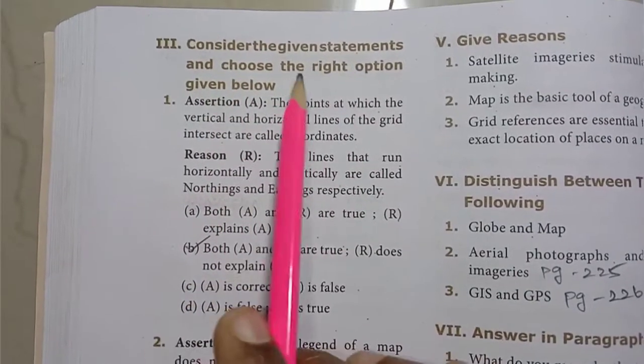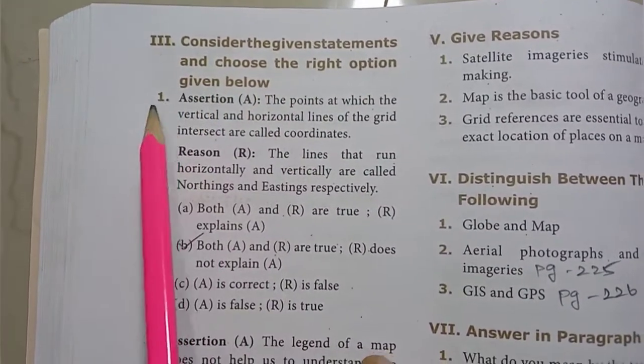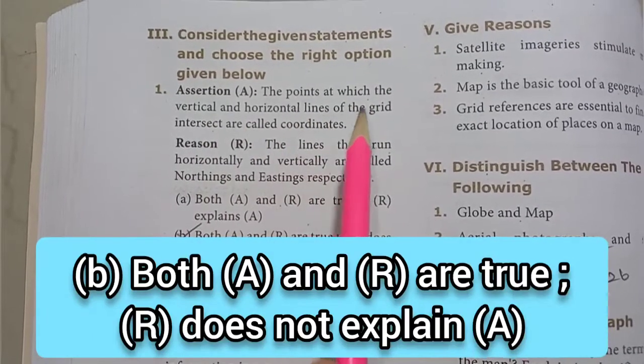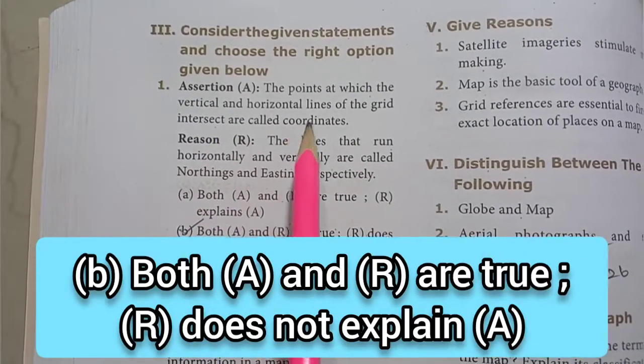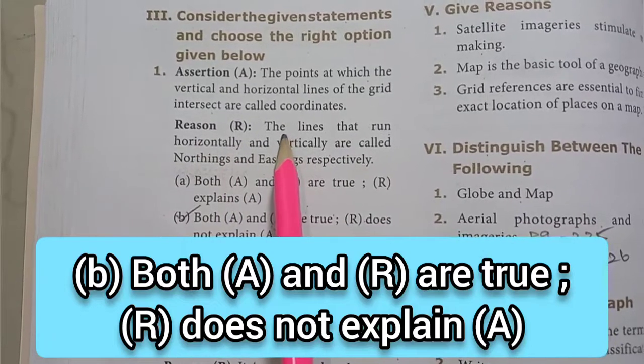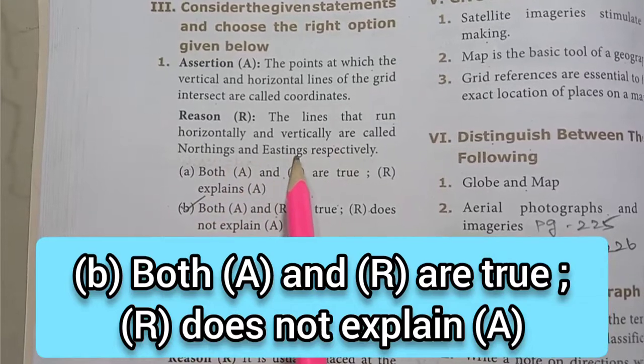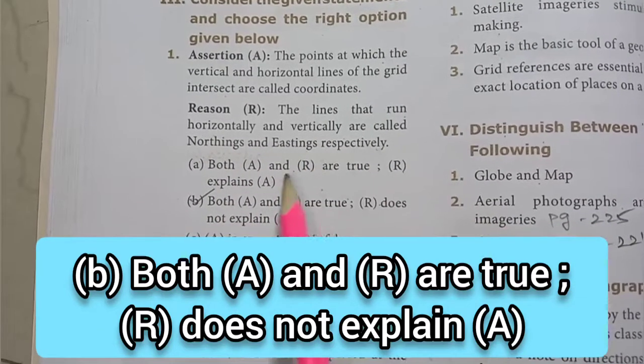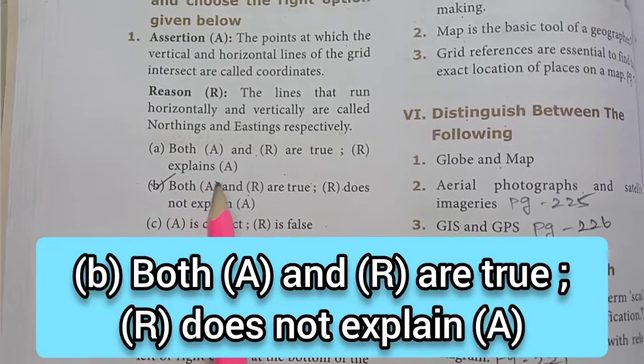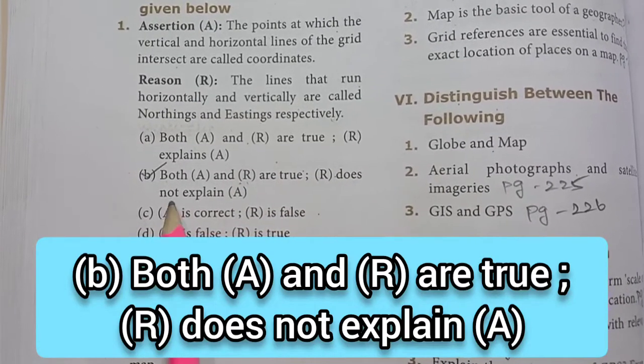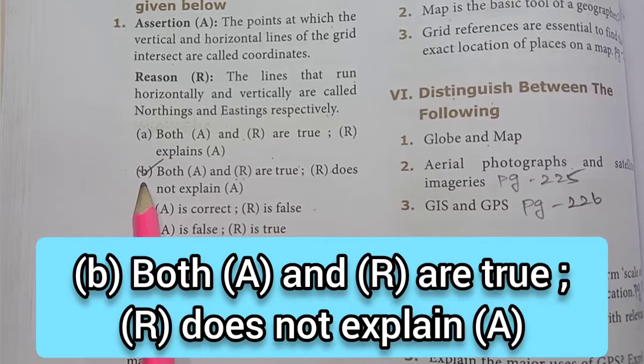Consider the given statements and choose the right option given below. First assertion: the points at which the vertical and horizontal lines of the grid intersect are called coordinates. Reason: the lines that run horizontally and vertically are called northings and eastings respectively. The answer is B option. Both assertion and reason are true, reason does not explain assertion.